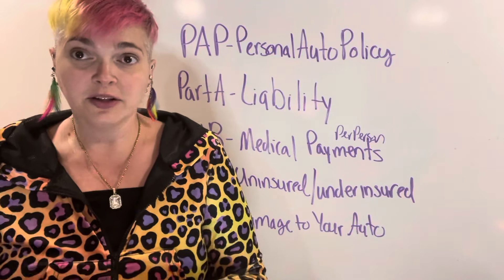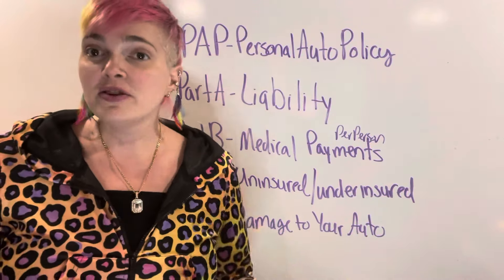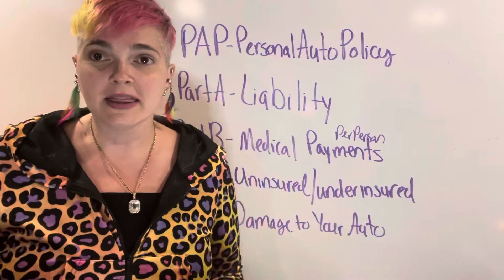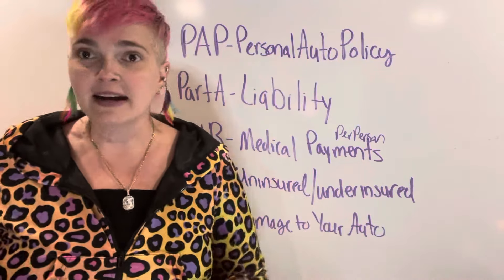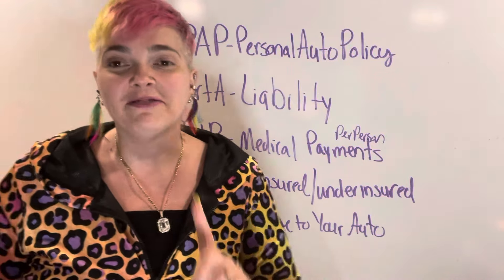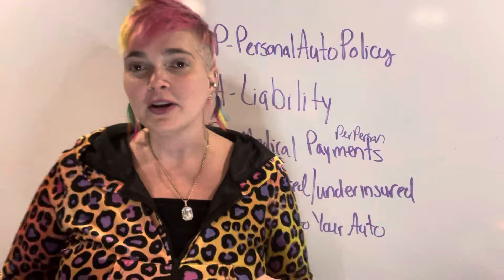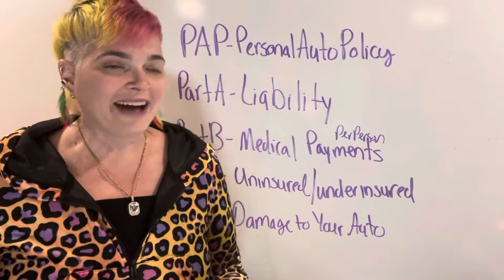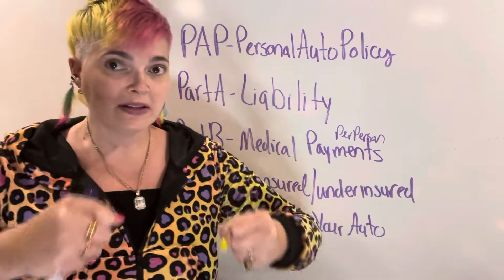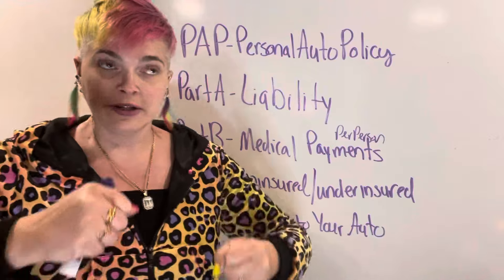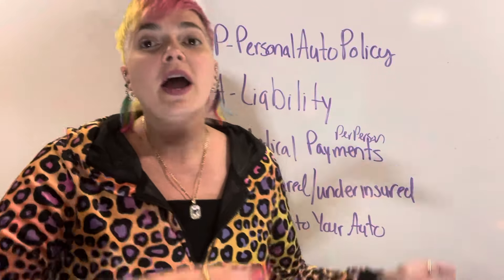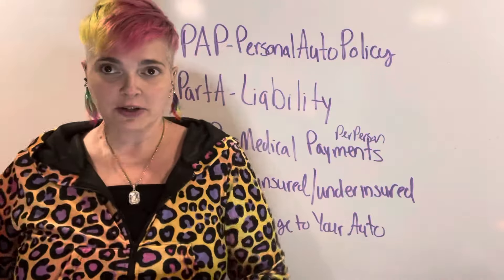Hitting an animal is other than collision. Other than collision — also known as comprehensive — covers mother nature and mother earth kind of things: earthquake, theft, vandalism, flood. Flood is covered under auto, not homeowners. It's all the things that are out of your control. Whereas with collision, you're driving the steering wheel and you're in control. Comprehensive covers things out of your control.